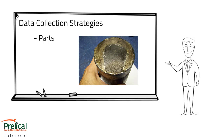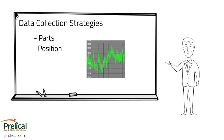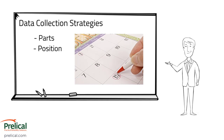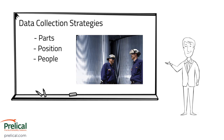Parts is probably what you think — failed parts from the failure scene — but it could also be a new part where you're comparing the failed part against a new part from the storeroom or vendor. Positional information includes things like a trend from your process historian, or position in time — for example, do failures happen more in winter versus summer, or more on one shift versus another?